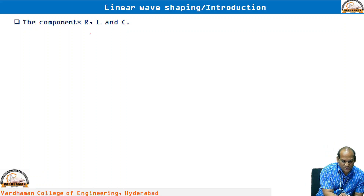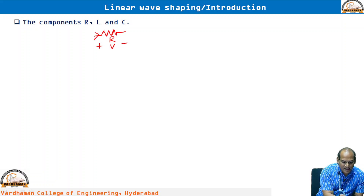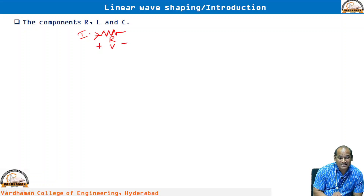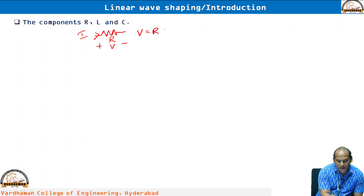We know very well about the resistor. The resistor circuit symbol is given, and for resistor R, if you apply a certain amount of voltage across it, the current I flows through the resistor from higher potential to lower potential. The relation among voltage V, current I, and resistor R is given by Ohm's law: V is equal to R into I.